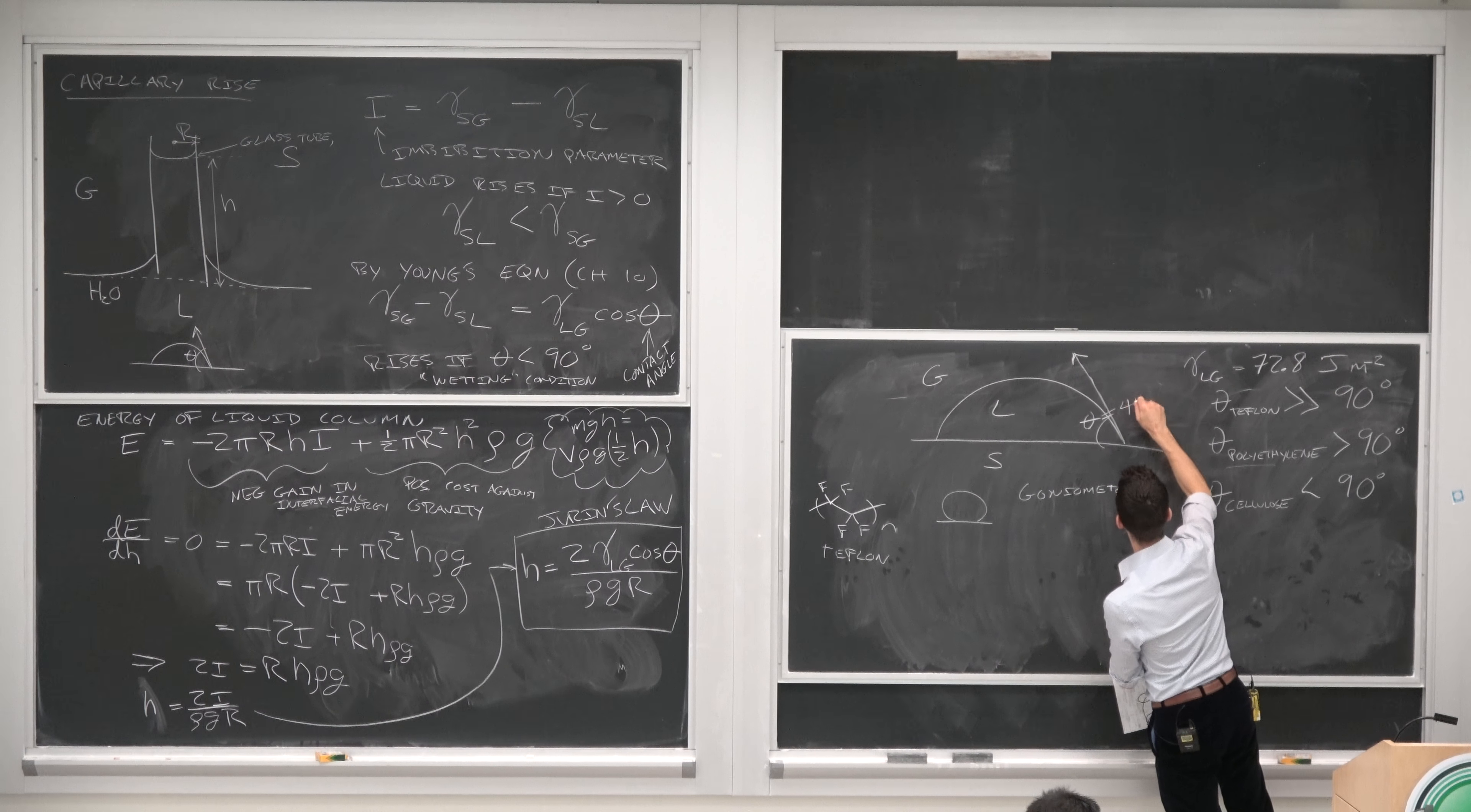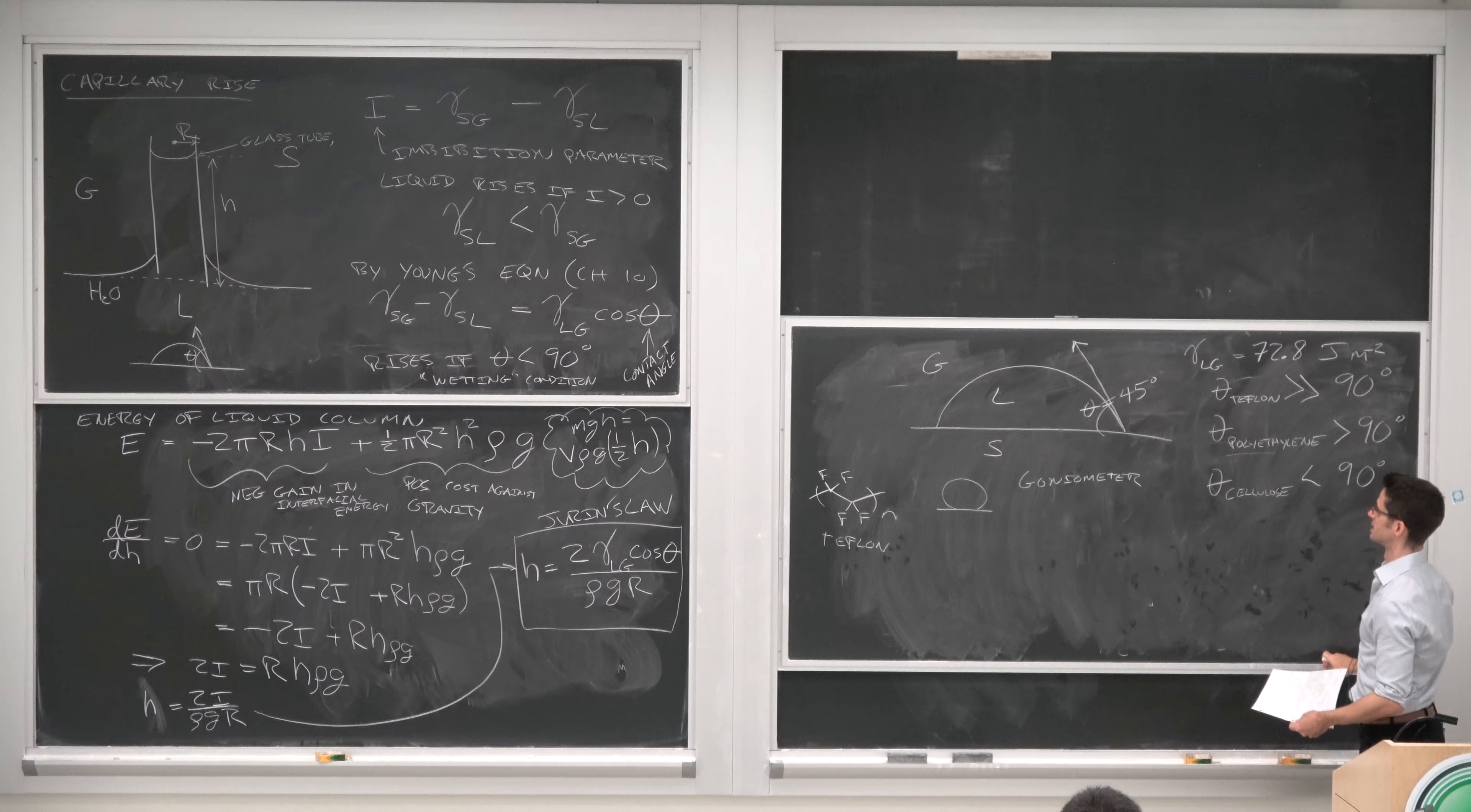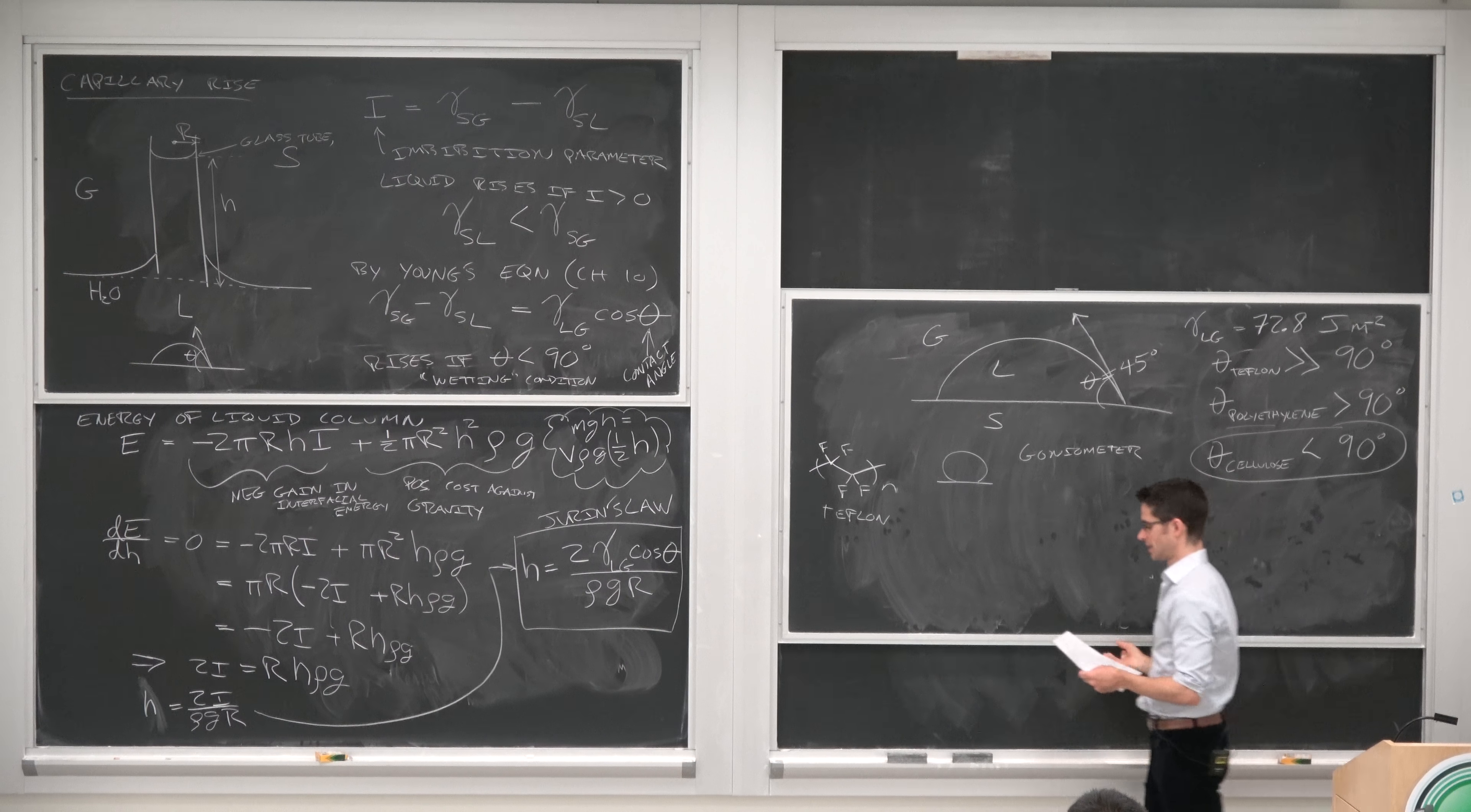And suppose we measured this at 40, say this was 45. Now, which one is it going to be? It's probably cellulose.